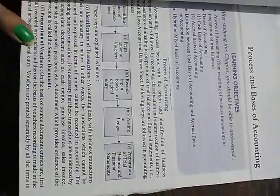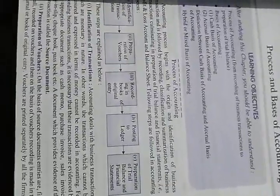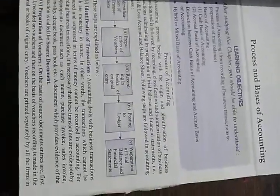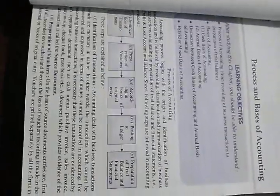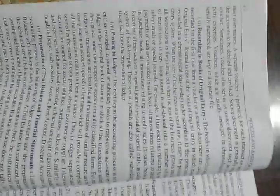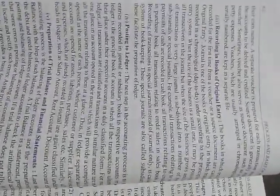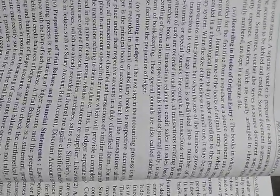Number two is preparation of vouchers. On the basis of source documents, entries are first recorded in vouchers, and then on the basis of the voucher, recording is made in the books of original entry. Vouchers are basically the source documents through which the journal entry is done. Each company's voucher is different by name — like when you go to a billing counter or a tailor shop, they give you a receipt. That receipt is called a voucher.